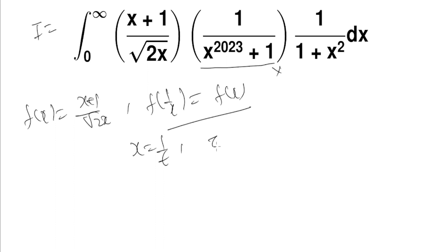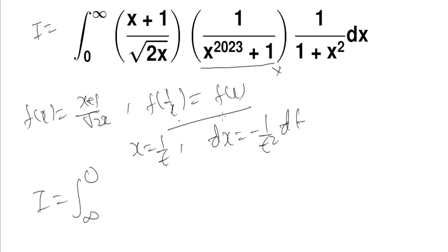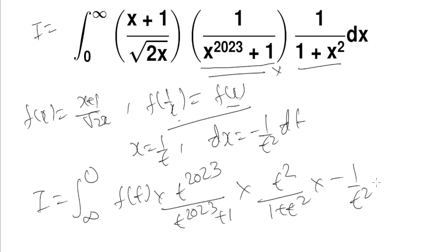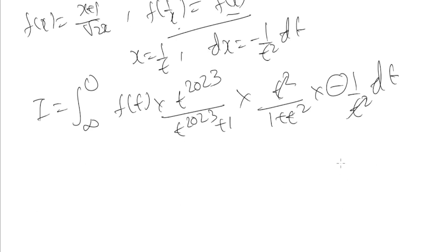First, substitute x equal to 1/t. Then dx equals minus 1 over t² dt. The limits change from infinity to 0, and f(1/t) is the same as f(t), so we can write it as f(t). This term becomes t^2023 over (t^2023 + 1), and the other term becomes t² over (1 + t²), and dx becomes minus 1 over t² dt — so we can cancel t².